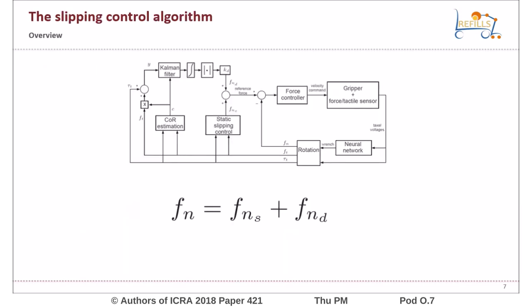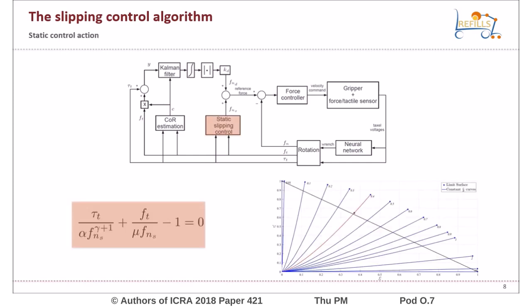The slipping control algorithm computes the grip force as the sum of two contributions, a static and a dynamic one. The static contribution is the solution of this equation. This contribution brings the point of the normalized external forces on the black line in figure. In this way, the grip force is high enough to balance the external loads without any slippage in case of constant loading.